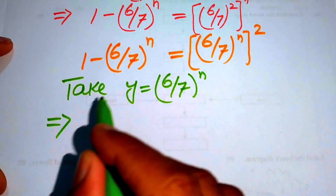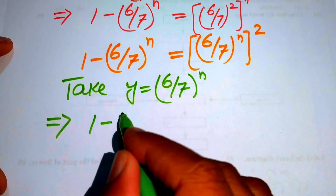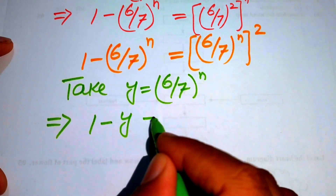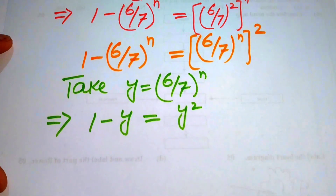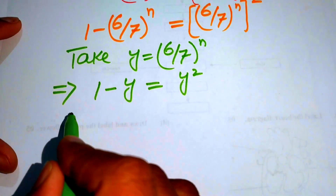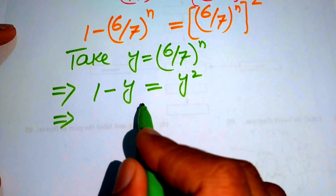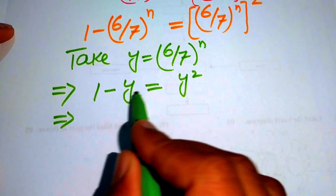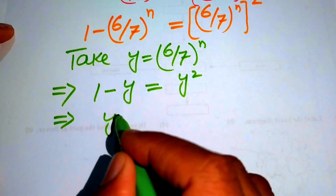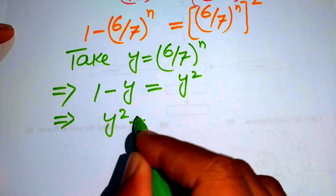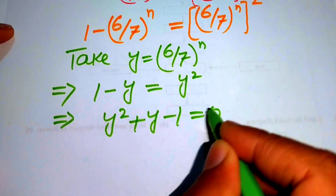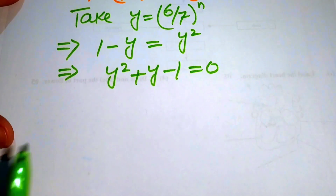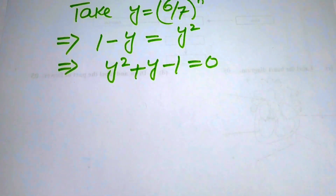Substituting y into the equation gives 1 minus y equals y². We rearrange this into standard form by moving all terms to one side, giving us y² + y - 1 = 0. We will use the quadratic formula to solve this.